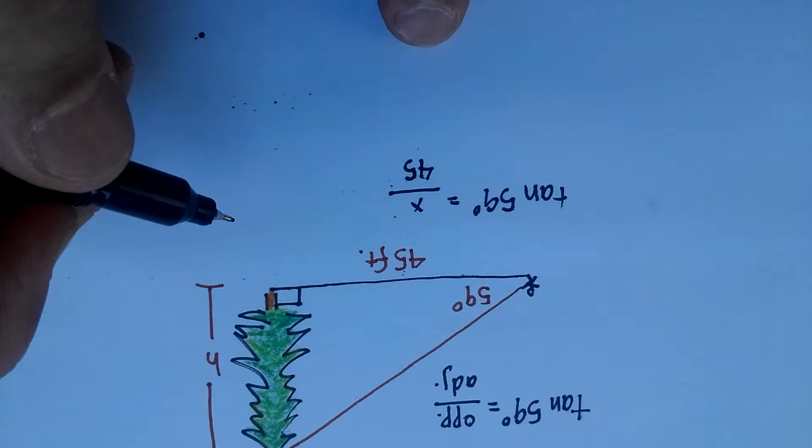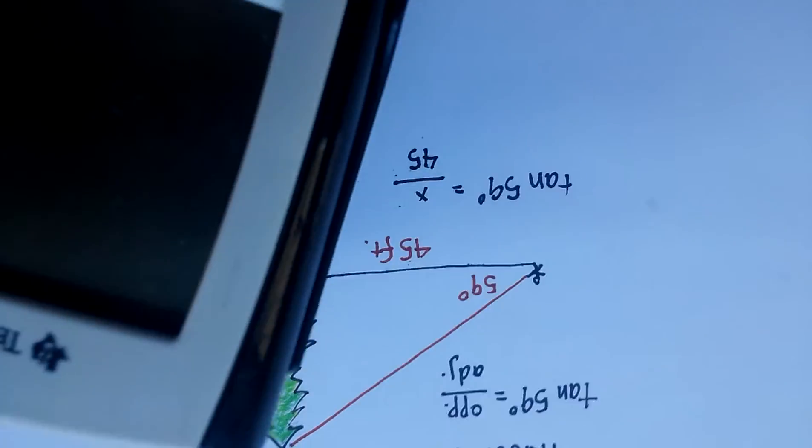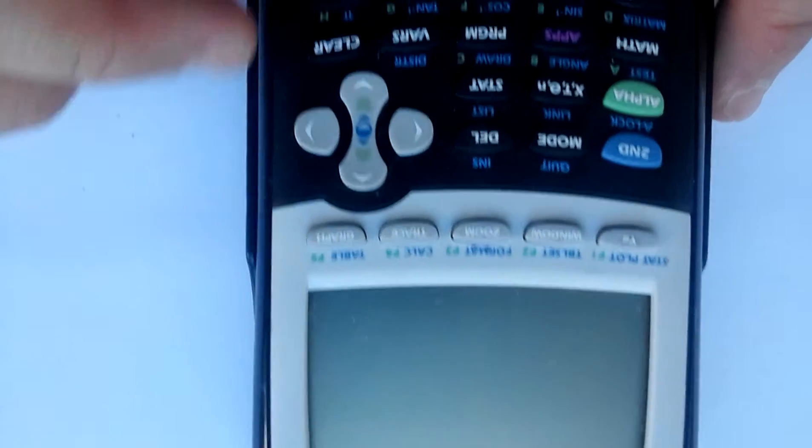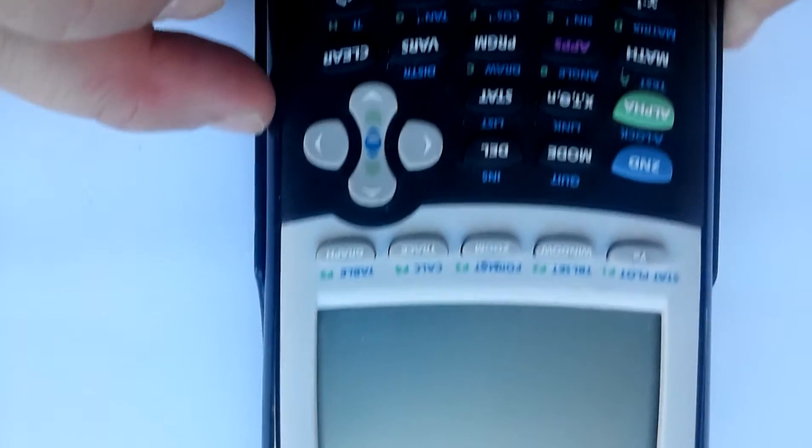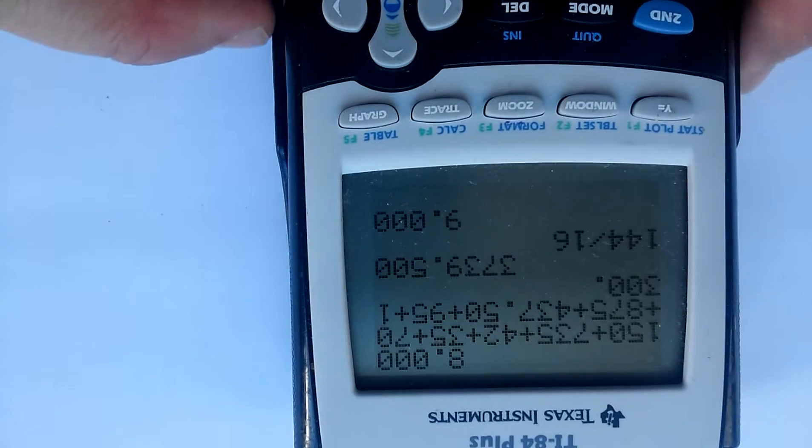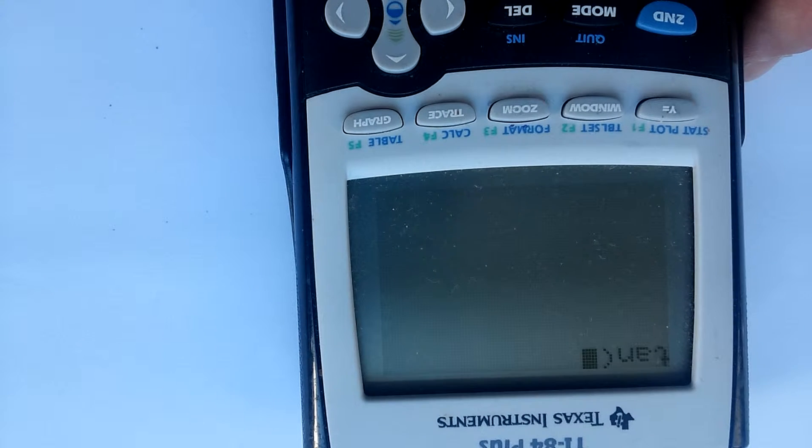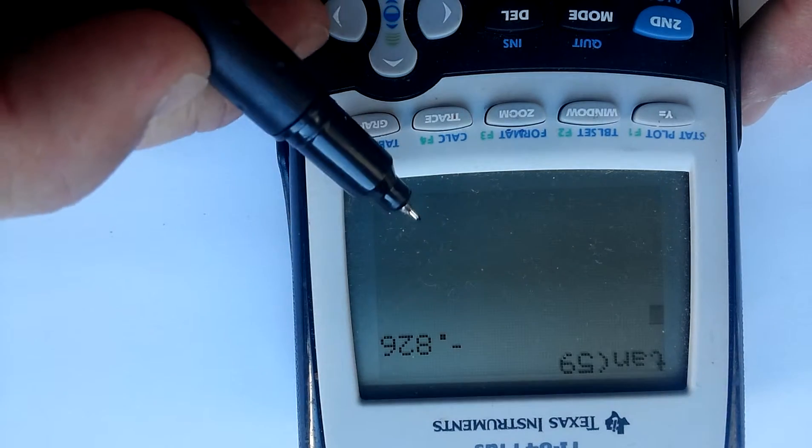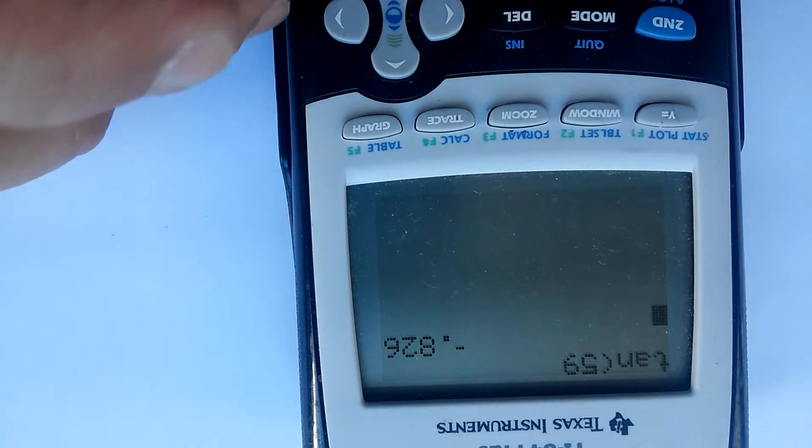Now, we can go to our calculators and look up the tangent of 59 degrees. Take out your calculator, and remember that the tangent button is located right here. We're going to enter tangent, then 59. And you'll get... that's actually an incorrect statement.